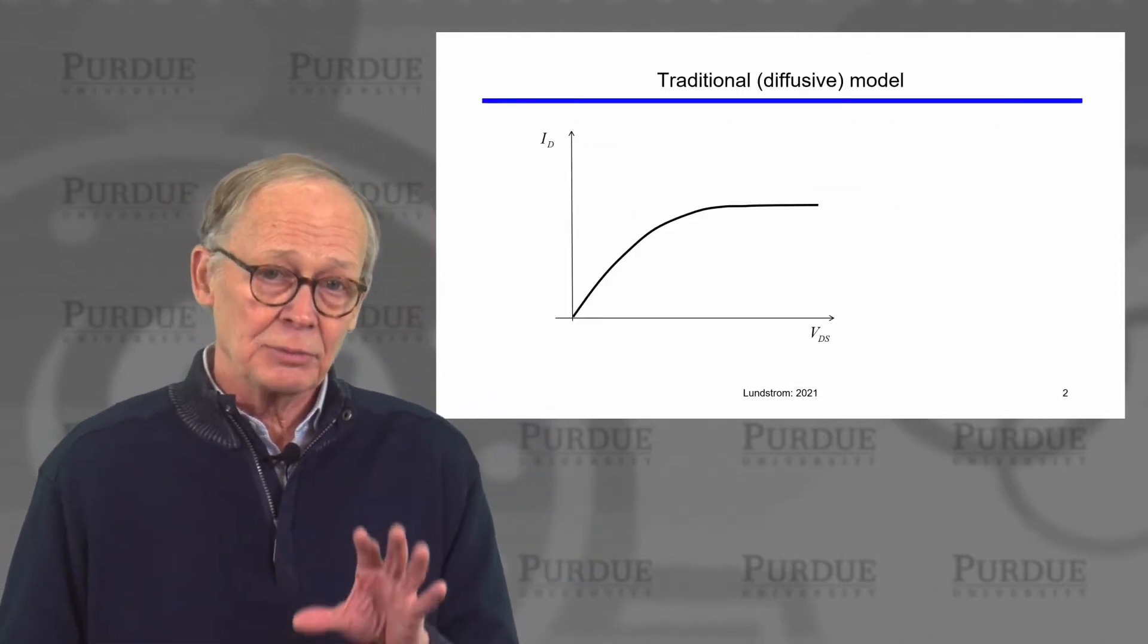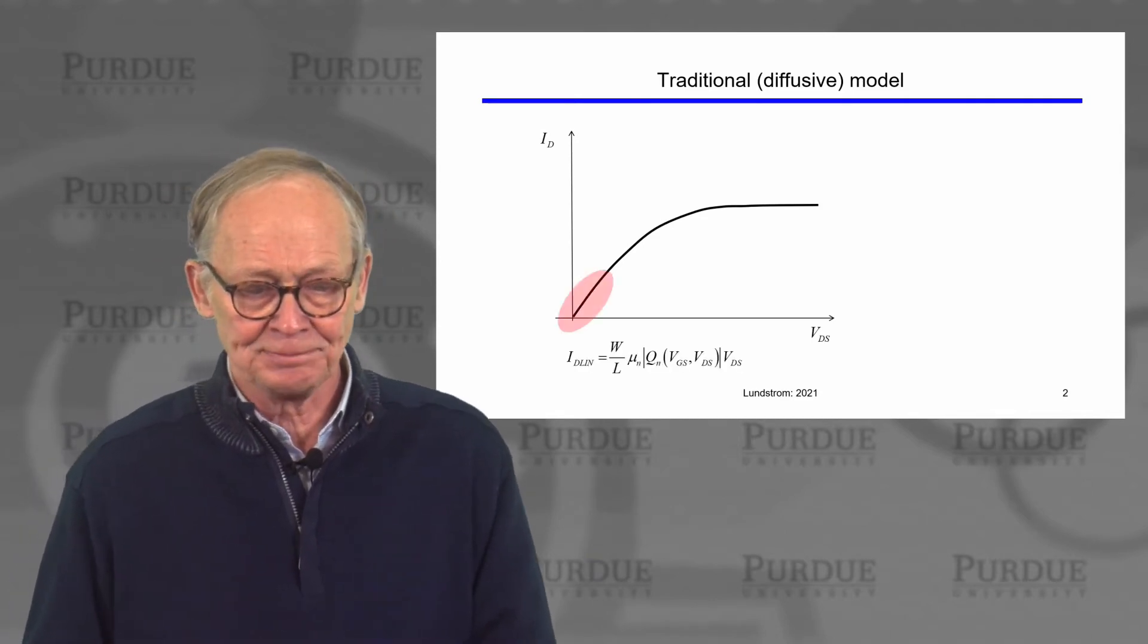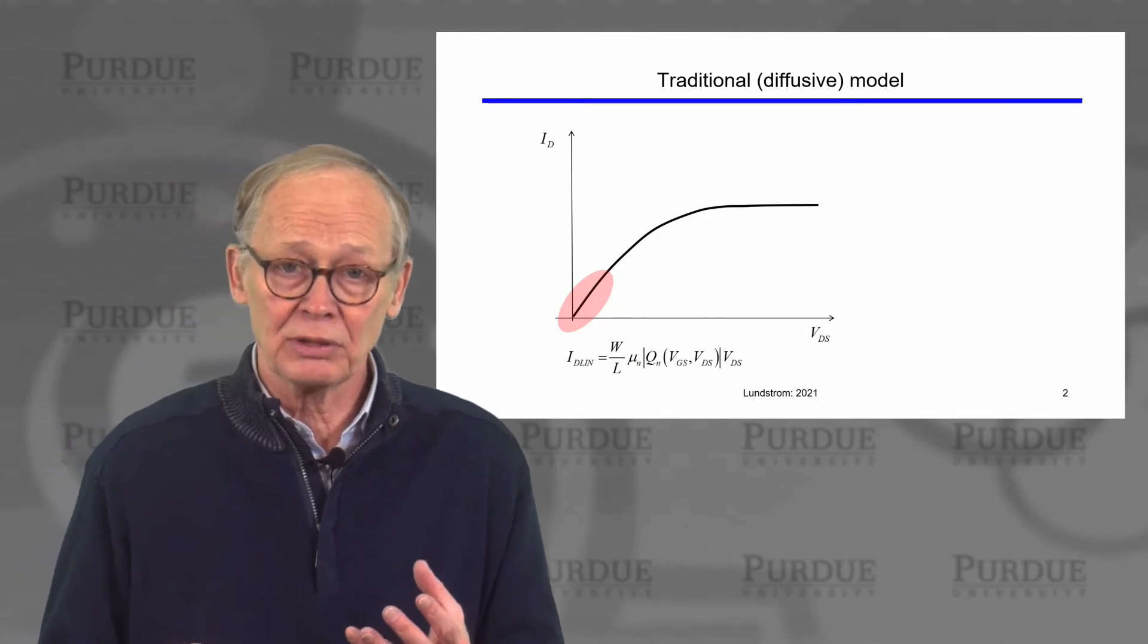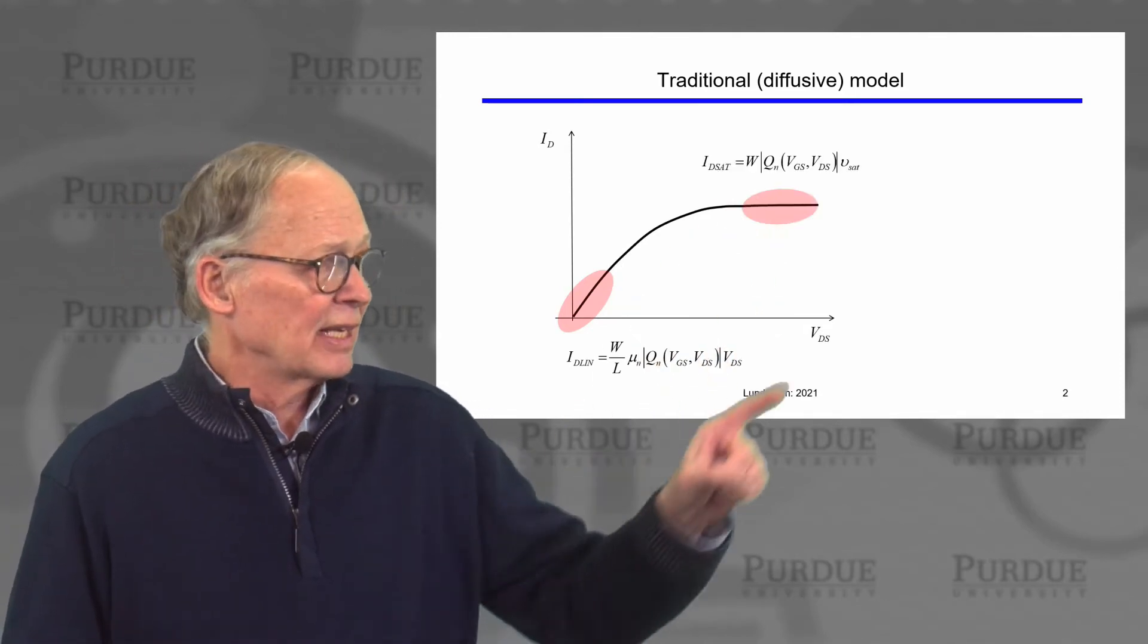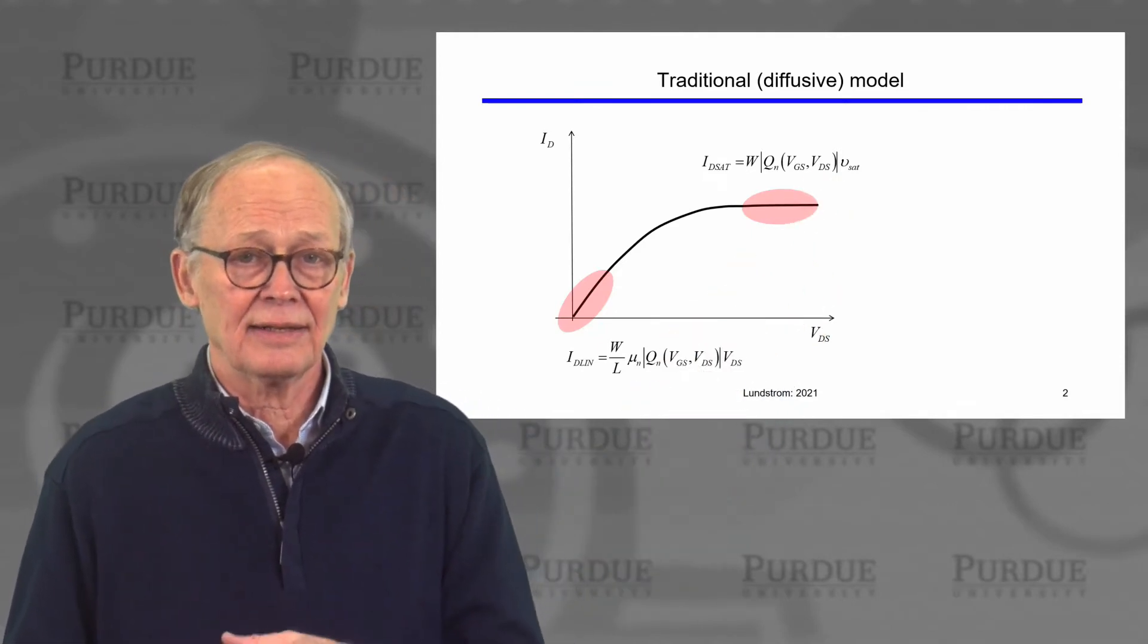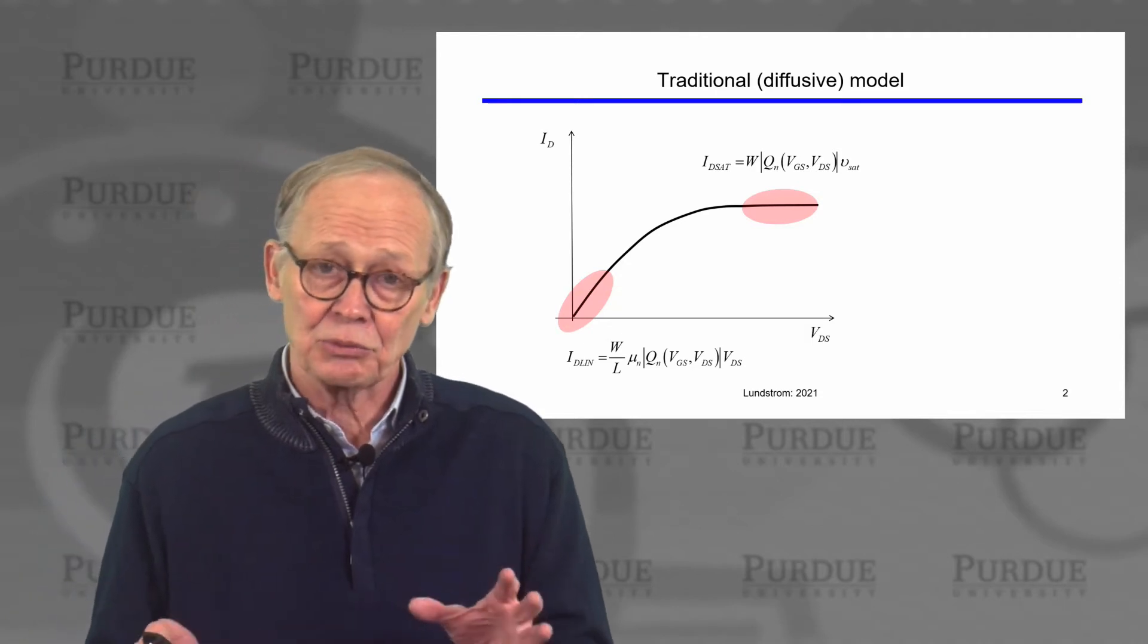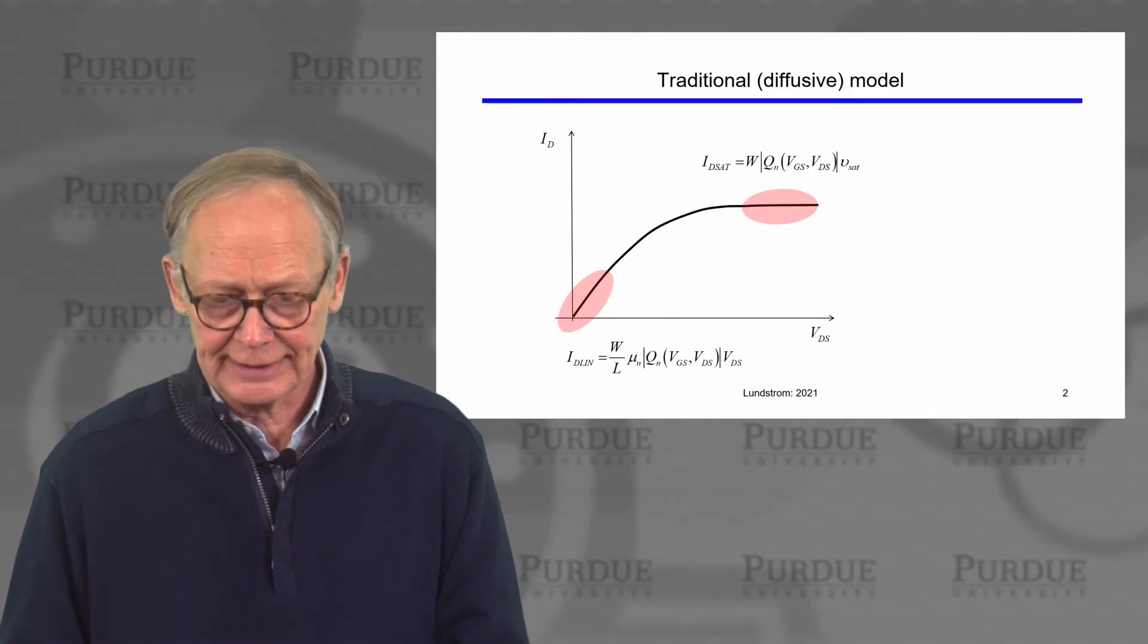Remember, we developed the virtual source model using a very traditional or diffusive model for the MOSFET. The linear region current involved a mobility, a traditional mobility due to scattering. The saturated current involved a high field saturation velocity due to the saturation of the velocity of highly energetic electrons under a high electric field. This model is relevant for MOSFETs with very long channel length.